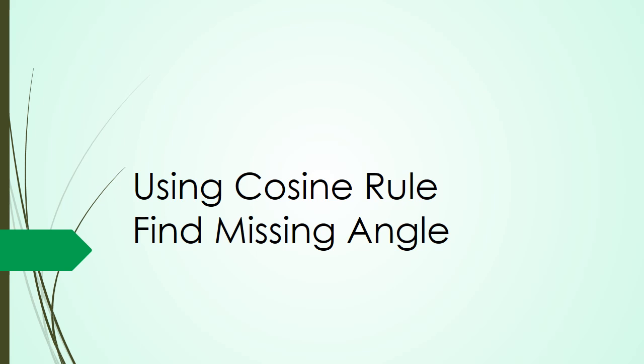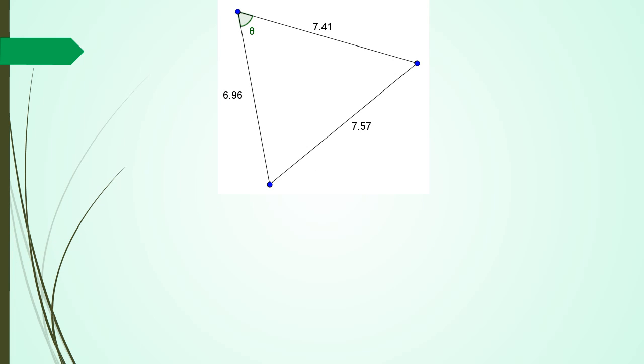In this session, we're going to be looking at using the cosine rule to find the missing angle. When do we use the cosine rule to find the missing angle? It's when we have three sides and one unknown angle. We can't use the sine rule because with sine rule we at least need to know one angle.